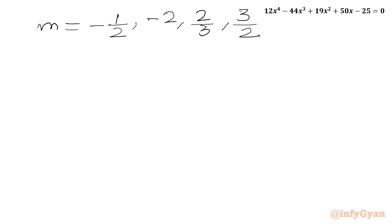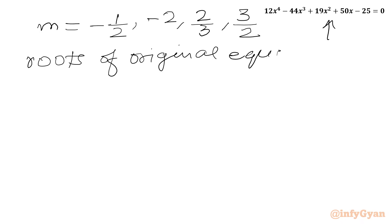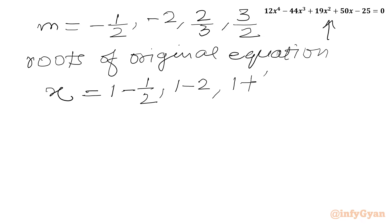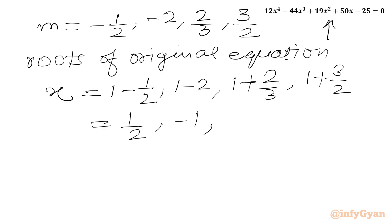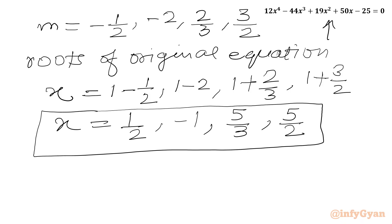Now for the roots of the original equation, we add 1 to each of the four roots of the required quartic. So x = 1 minus 1/2 = 1/2; x = 1 minus 2 = minus 1; x = 1 plus 2/3 = 5/3; and x = 1 plus 3/2 = 5/2. So these are the roots of our original equation. I hope friends you will like this video.